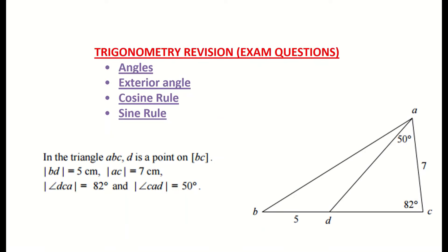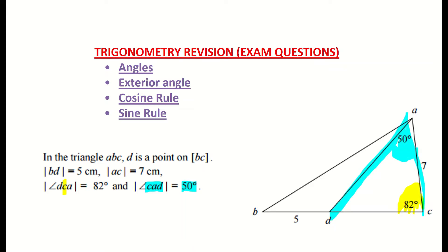This video goes over trigonometry and works through an exam question. It practices our use of angles — exterior angles, the sine rule, and the cosine rule are all used. There's a bit of revision on how to label angles: the angle DCA means you start at D, go to C, and finish at A. It's always the middle letter that defines the angle, so angle C is 82 degrees. Similarly, angle CAD starts at C, goes to A, and down to D — the middle angle is 50 degrees.